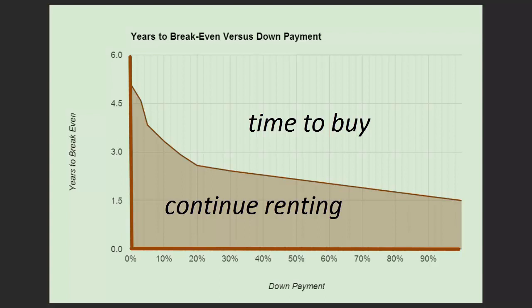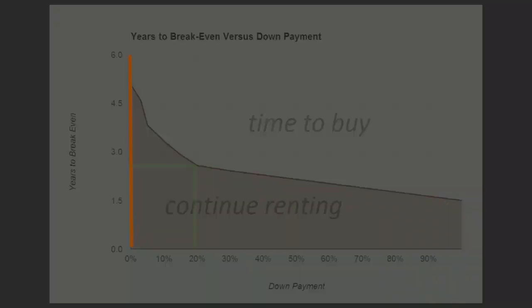For example, this graph shows if you put 20 percent down, you should plan to own the house for at least two and a half years.